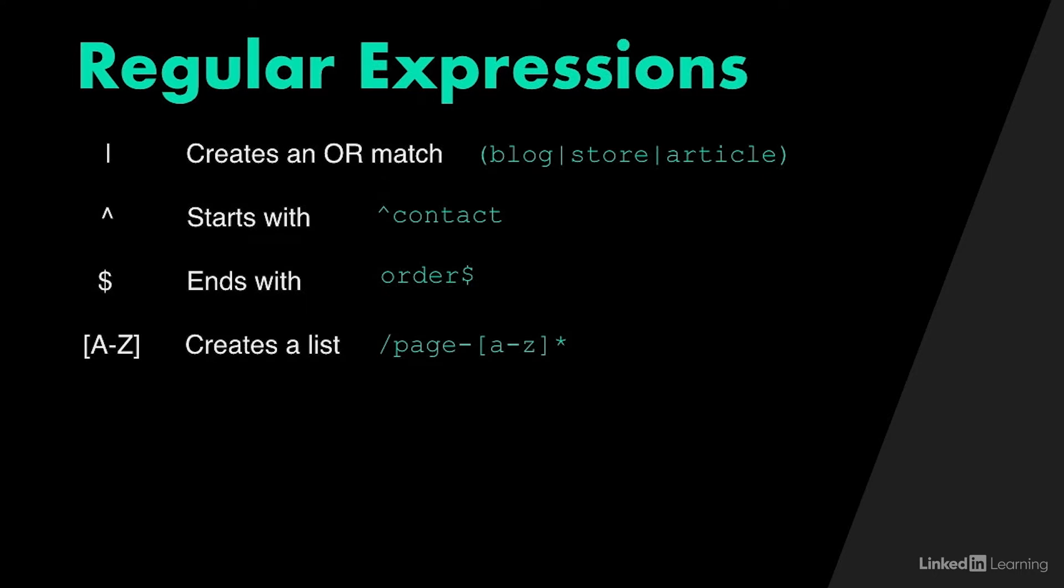The first is the pipe symbol. I use this one very often, and this is used to create an OR match. Let's say I'm setting up a filter, and I want to include my blog, store, and article directories. I would simply put blog, pipe, store, pipe, article, and now it's going to be blog, or store, or article.